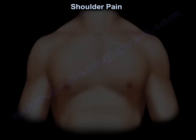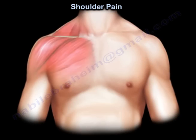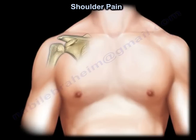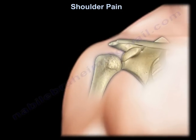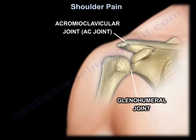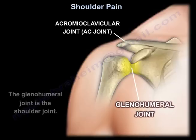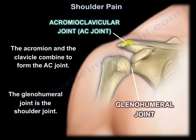There are two main joints within the shoulder: the acromioclavicular joint and the glenohumeral joint. The glenohumeral joint is the shoulder joint. The acromion and the clavicle combine to form the acromioclavicular joint, or the AC joint.